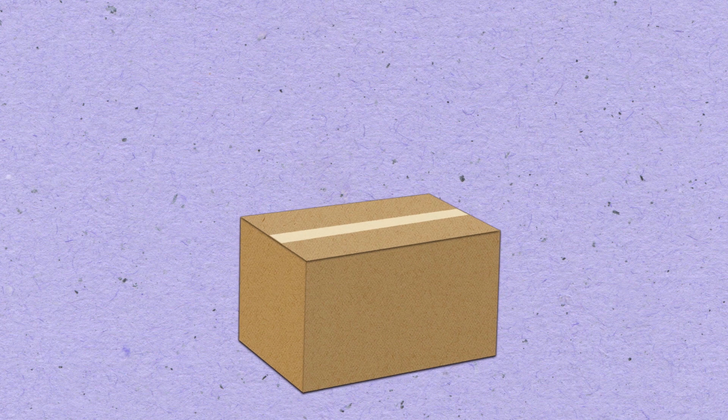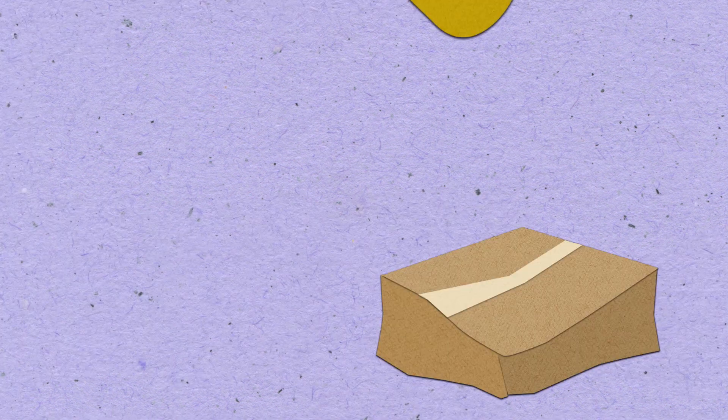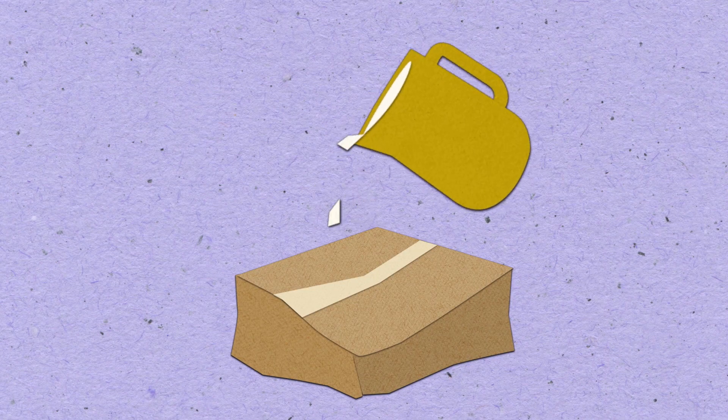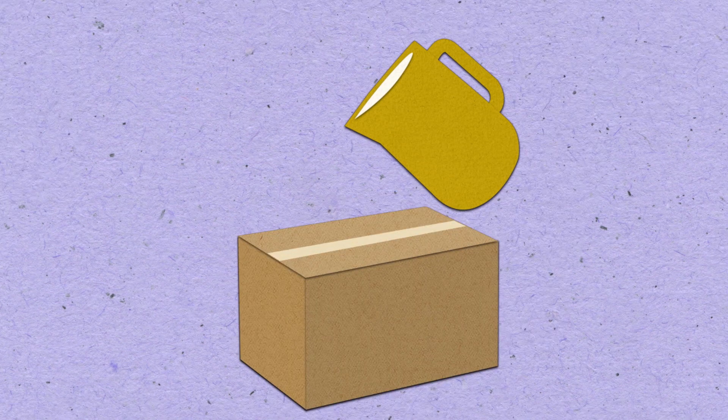In packaging, and in particular for recycled base liner and fluting, starch is used to increase the strength of the product.